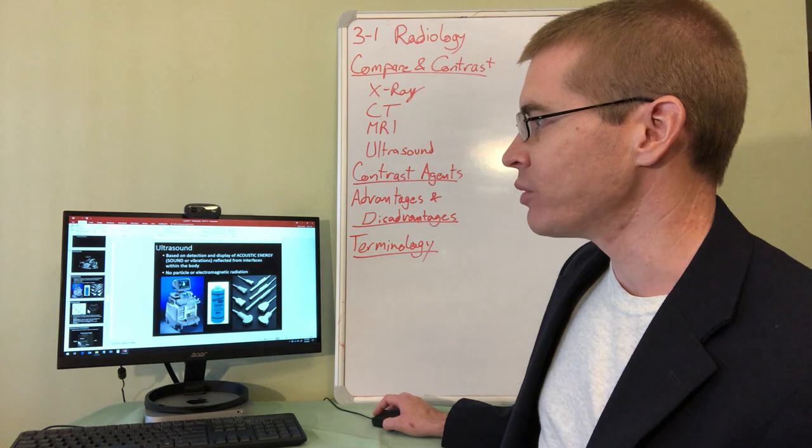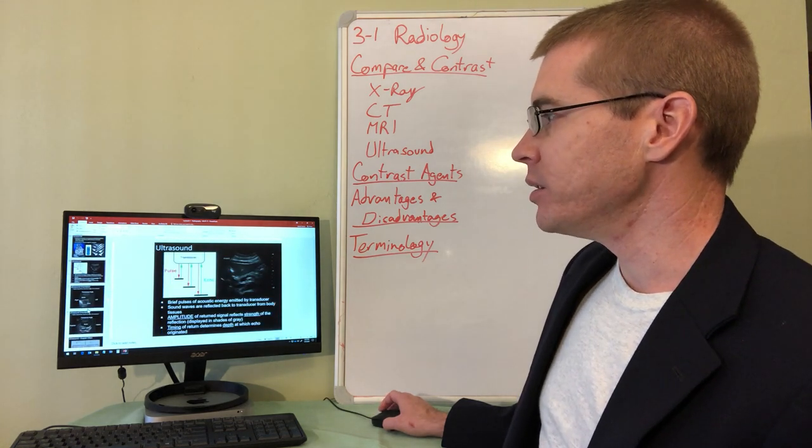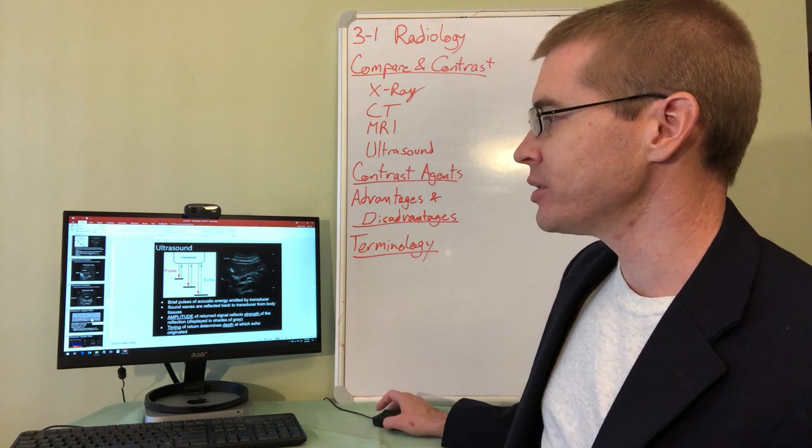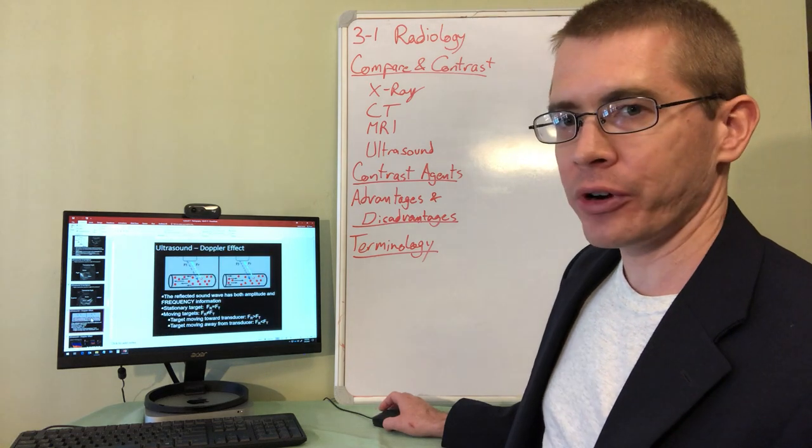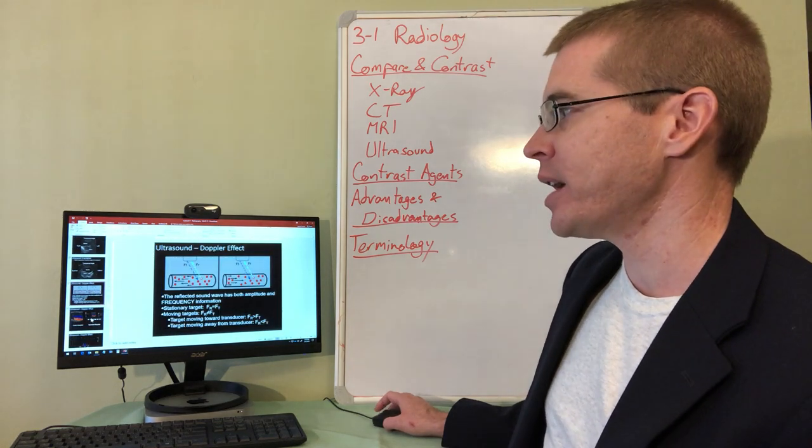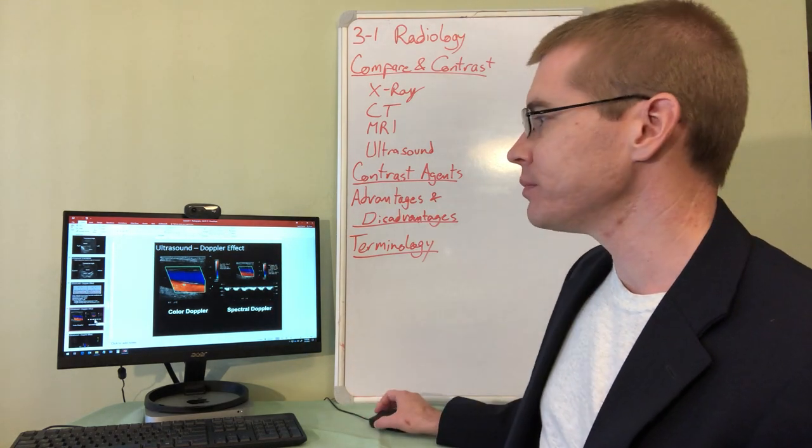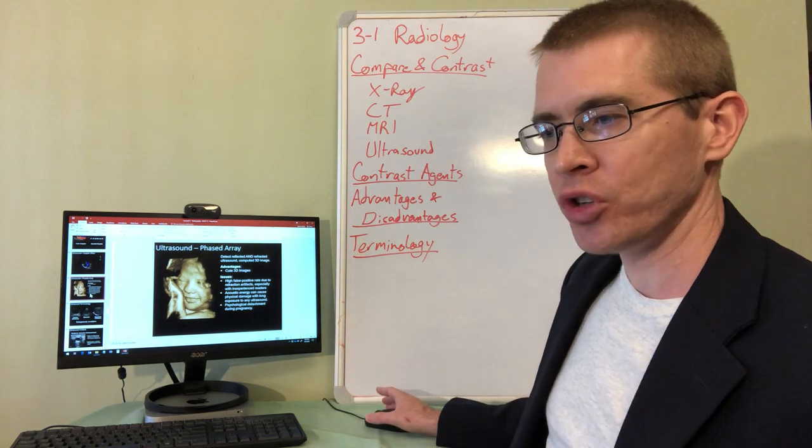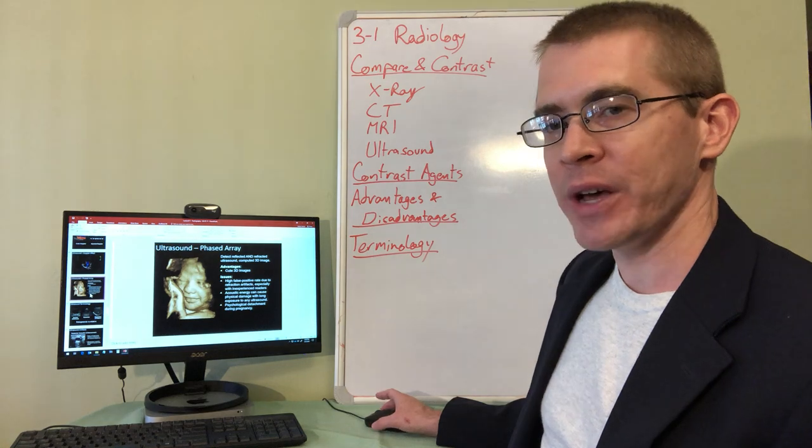Ultrasound, of course, uses sound waves with a transducer. And the neat thing about ultrasound is that it doesn't use high energy ionizing radiation, but there's also a Doppler effect. So you can detect the directionality of blood flow in a vessel. So there's also phased array ultrasounds where you can have multiple transducers that are detecting the echoes as they bounce off surfaces.